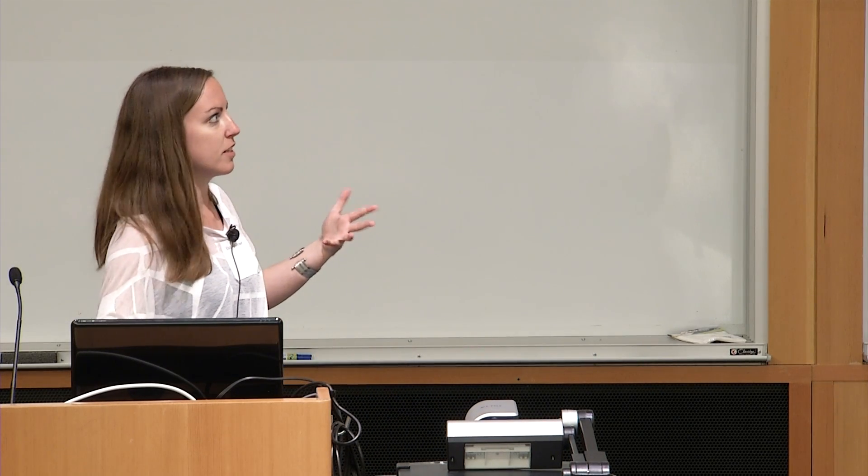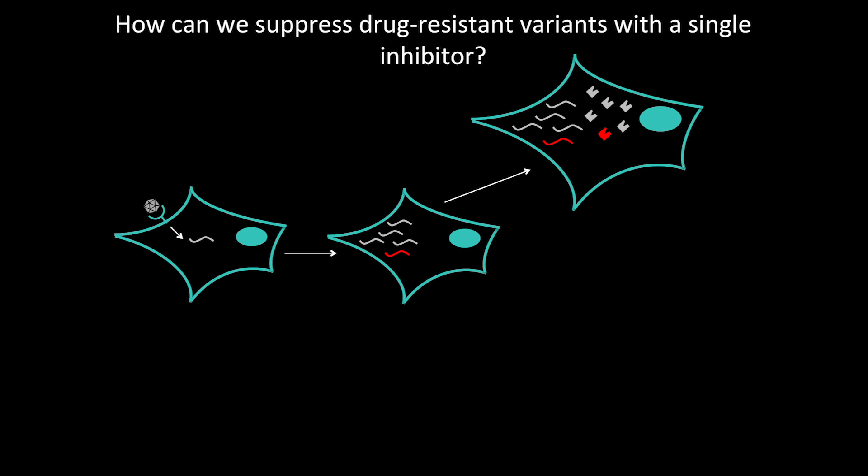Drug resistance is really this intuitive process of mutation and selection. A virus infects a cell and starts error-prone replication of its genome, and just by chance one of those progeny happens to be drug resistant. When you add the drug, you end up inhibiting everything except for that resistant variant, and it spreads and amplifies — basically rendering your drug useless in a very short amount of time.